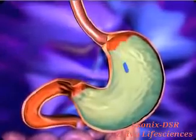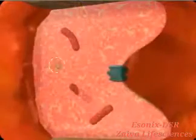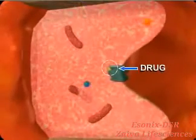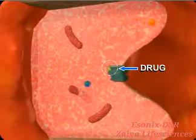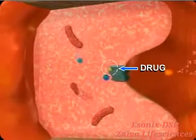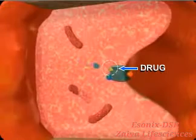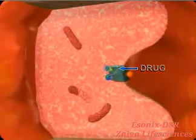Proton pump inhibitors are drugs which reduce acid secretion of the stomach. The drug binds irreversibly to the proton pump and prevents the active transport of protons, which dramatically decreases the acid secretion of the stomach.